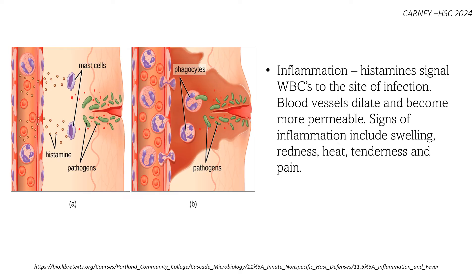The inflammatory response is like the body's superhero reaction to an injury or infection. When an injury such as a cut or a splinter occurs, bacteria attempt to enter the body through the break in the skin. Cells at the injury site release histamines as a signal to white blood cells to help fight the immune response. Blood vessels dilate to increase blood flow, and the blood vessel walls become more permeable to allow white blood cells to slip through to the site of infection. This process results in swelling, redness, heat, tenderness, and pain on the surface of the skin.